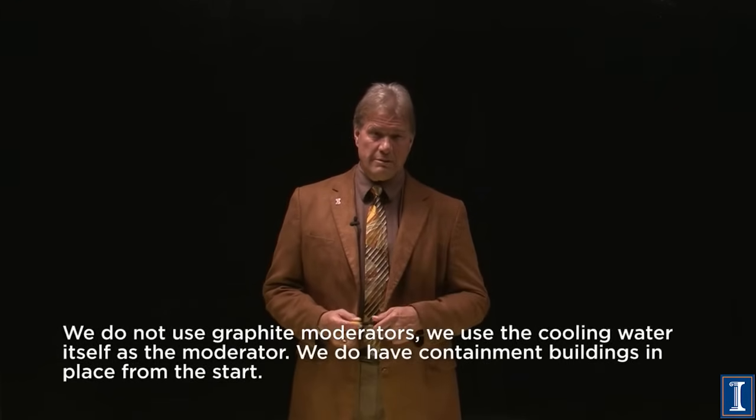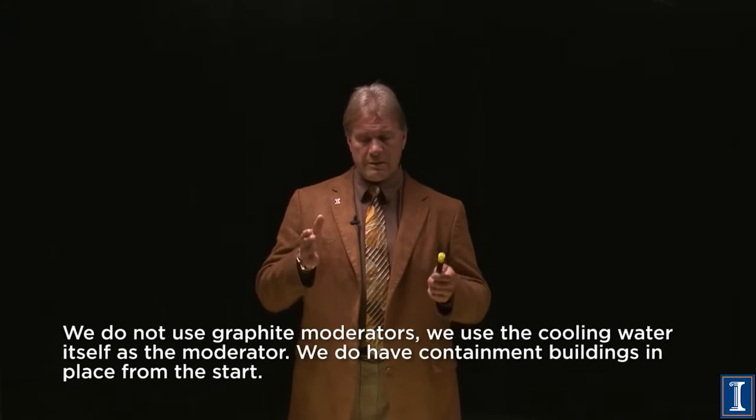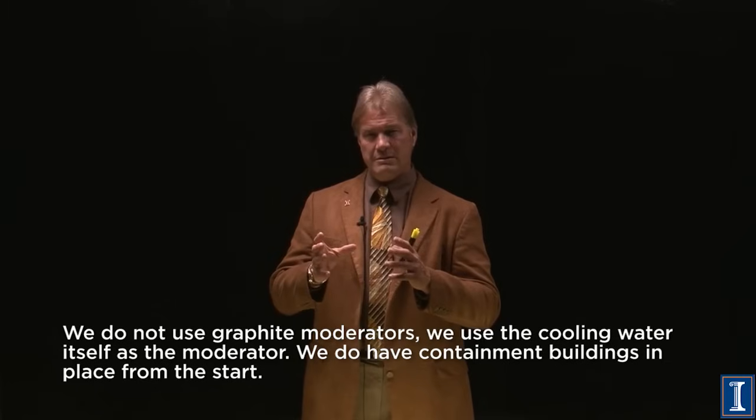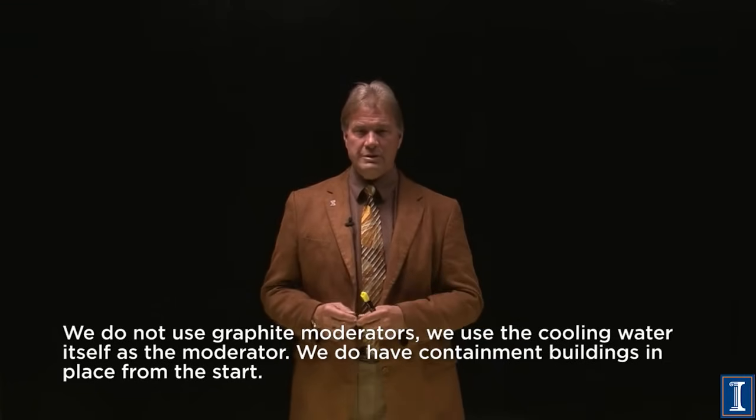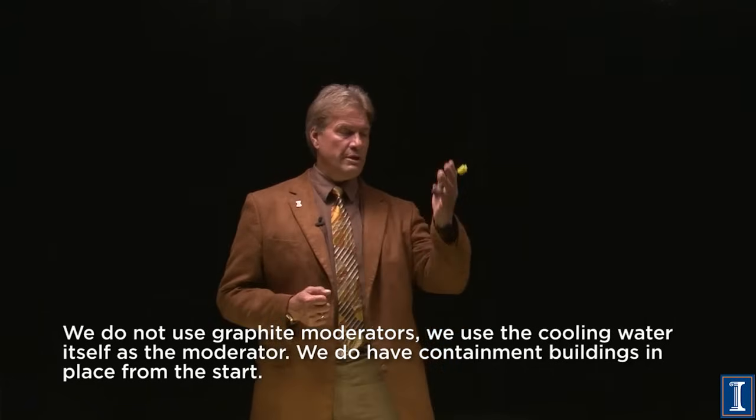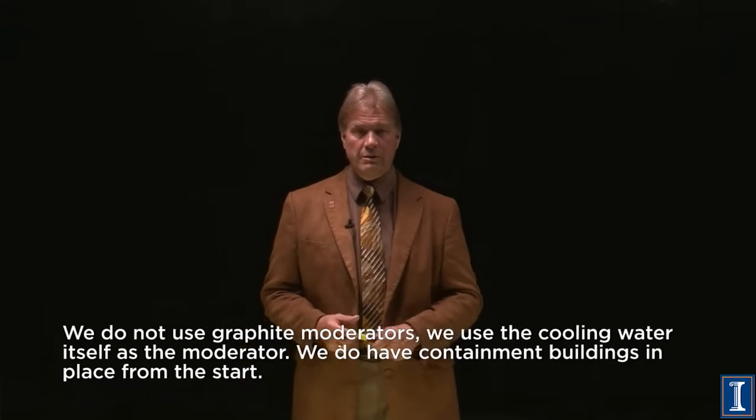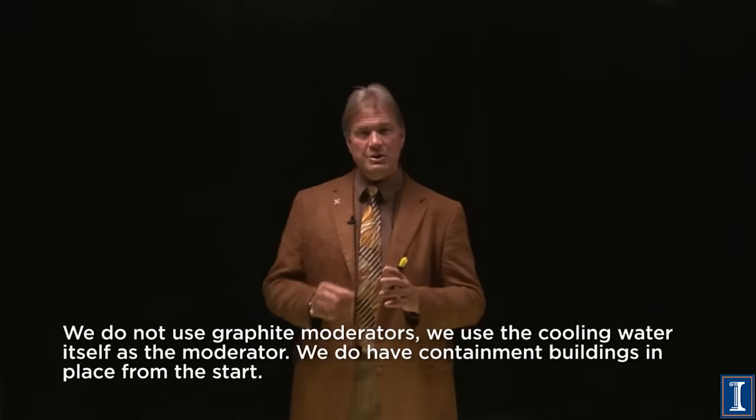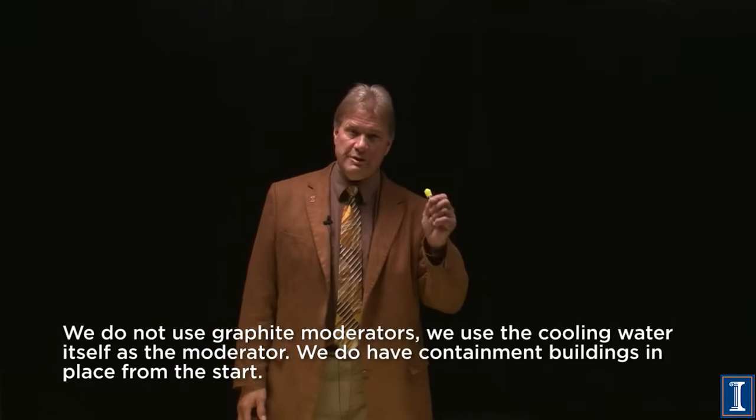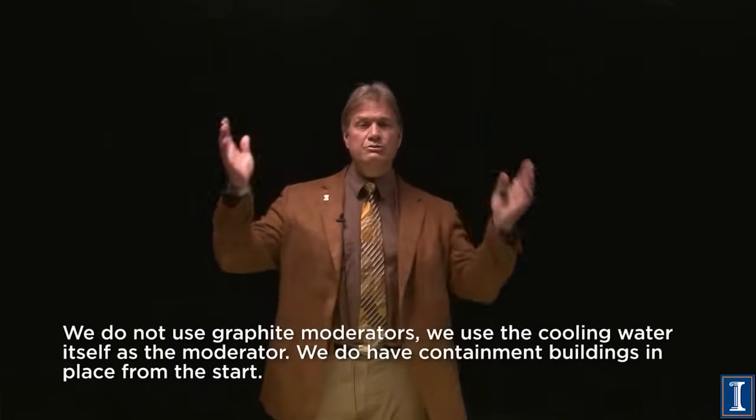Chernobyl cannot happen in another place because we don't use graphite-moderated, water-cooled reactors anywhere anymore. And it also can't happen because we have containment buildings. What Chernobyl did do was show that you really need to rely on physics, not humans, to keep reactors safe. The fail-safe of having the water drain away and, hey, chain reaction stops is a great one. The new, passively safe, Generation 3 designs that don't even need water to be there to keep the fission product decay heat away, can just lose that energy by convection. Again, relying on physics makes things even safer. That's what you need to know about Chernobyl.